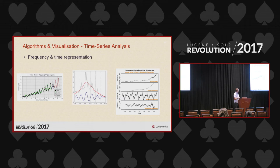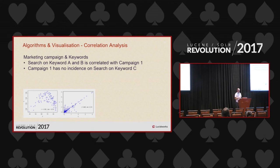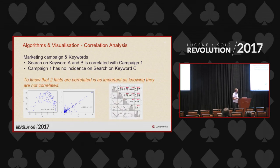Frequency and time representation: a periodic signal is easy to see. But you can also compute the difference between two signals — one line of R code — and see the periodicity in the result even when neither signal alone shows it clearly. When two facts are correlated that's important information, but when they are not correlated it's also important: for example, your marketing campaign has no impact, or you bought the wrong keyword on Google and see no traffic evolution.